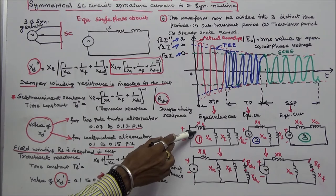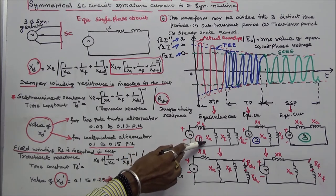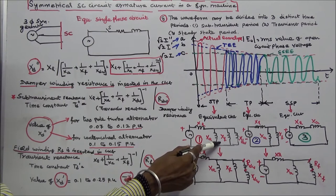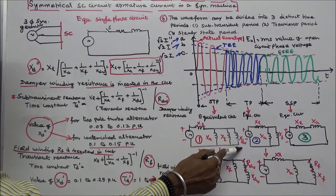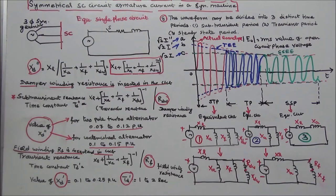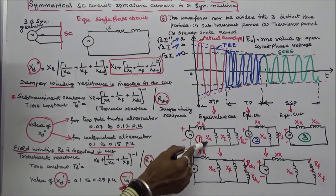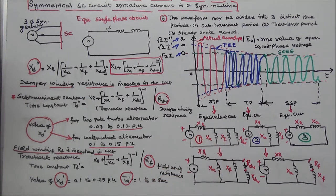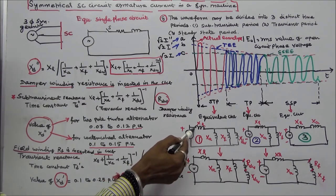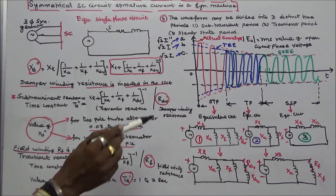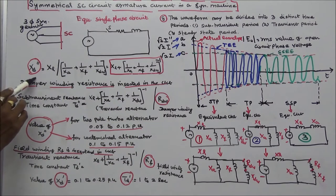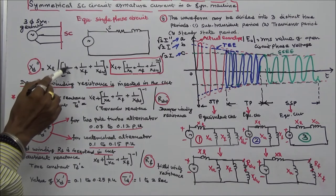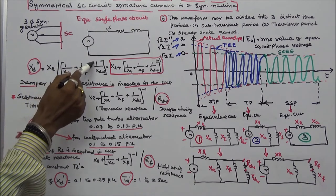Here XL is the leakage reactance, XA is the armature reaction reactance, XF is the field winding reactance, and XDW is the damper winding reactance. XA, XF, and XDW are connected in parallel, and XL is connected in series with the source. Therefore, the net reactance is X double dash, the subtransient reactance, equal to XL plus 1 divided by (1/XA + 1/XF + 1/XDW).